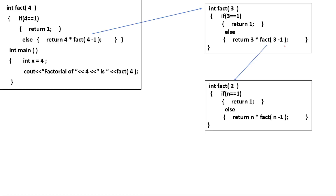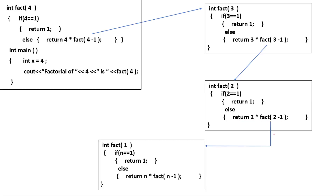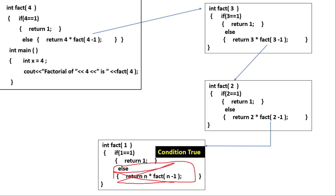Now n = 2: the base condition 'n == 1' is checked — 2 is not equal to 1, condition is false, else executes: return 2 × fact(2−1) = 2 × fact(1). Now n = 1: the compiler checks 'if n == 1' — 1 == 1 is true, so we have successfully reached the base condition. The if body executes: return 1. This ends the function and returns 1 to the point where it was called.